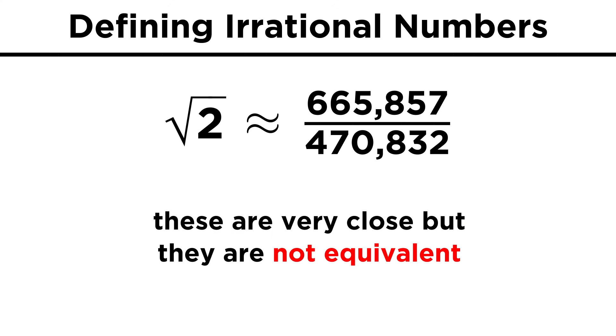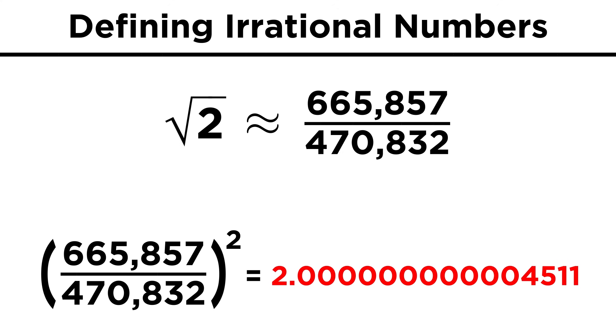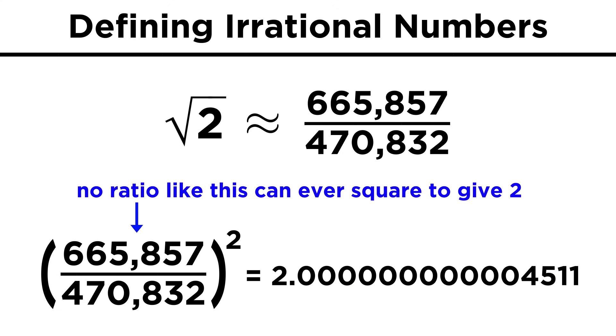If we try to approximate root two this way, we can get very close, with something like 665,857 over 470,832, but it's not exactly right, and when we square this number, we get something just ever so slightly larger than two. No matter how precise you try to get with this ratio, you will never quite get to the true value.